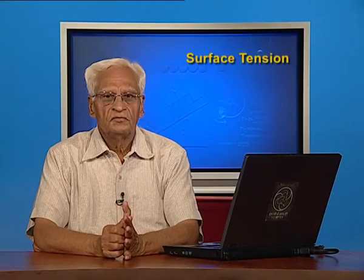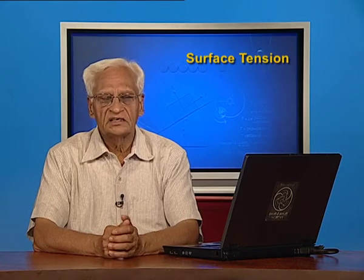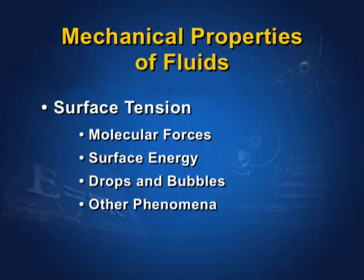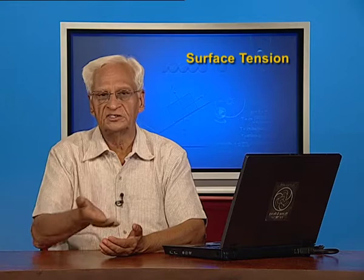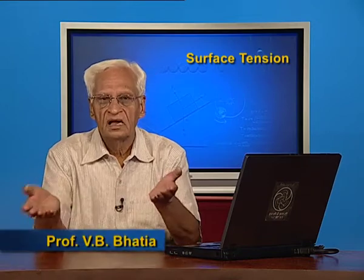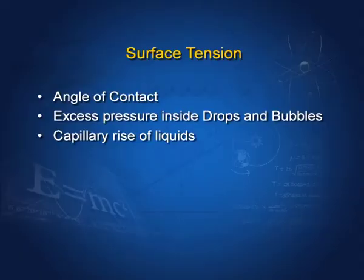In the last lecture, we were talking about surface tension. We learned that surface tension is caused because the molecular forces acting on molecules on the surface of the liquid do not all balance, and therefore the liquid surface is stretched, producing a force along it called surface tension. In this lecture, we shall talk about the angle of contact, find the excess pressure in drops and bubbles, and also see the capillary rise of liquids.